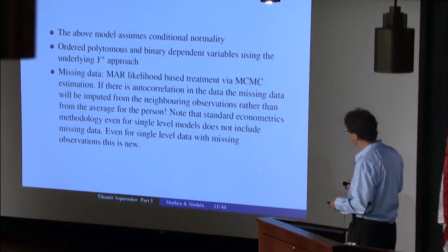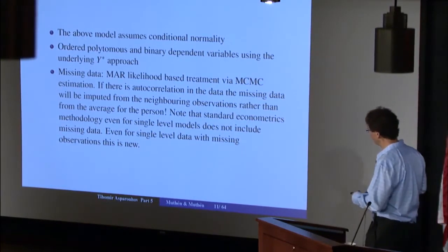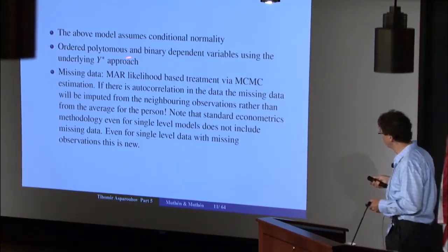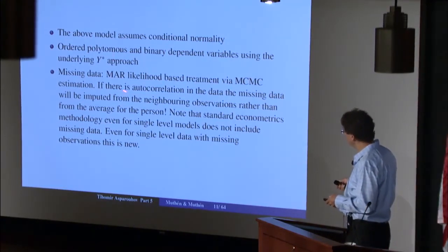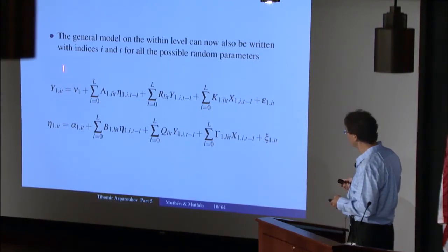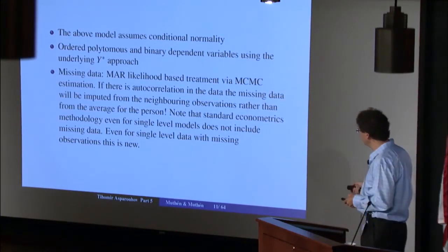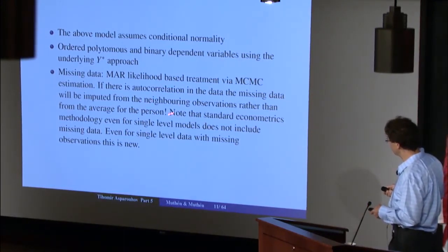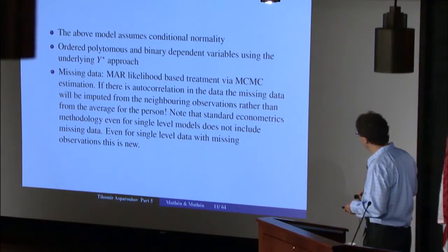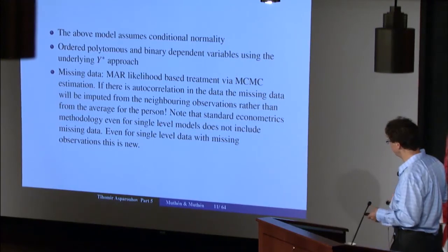The general assumption is that all residual variables in the model are assumed conditionally normal. Categorical variables are incorporated using the underlying Y-star approach — essentially a probit link function — where Y-star is cut through threshold parameters. Missing data is treated using a likelihood approach, and under the missing at random assumption, MCMC estimation guarantees asymptotically consistent estimates.